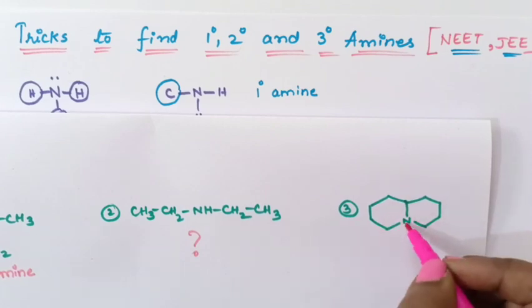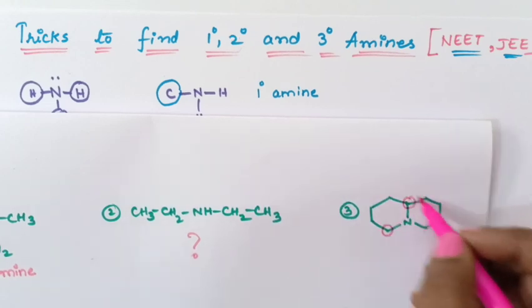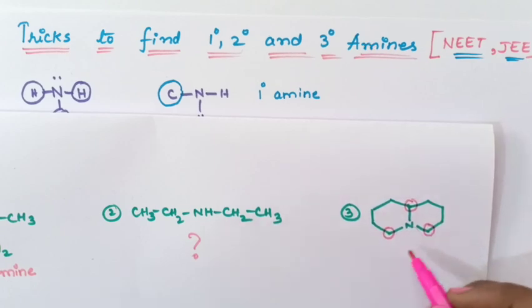So third one. This nitrogen is connected to how many carbons? This nitrogen is connected to 1 carbon, 2 carbon and here 3 carbon. So if 3 carbon atoms are attached then we call this as tertiary amine.